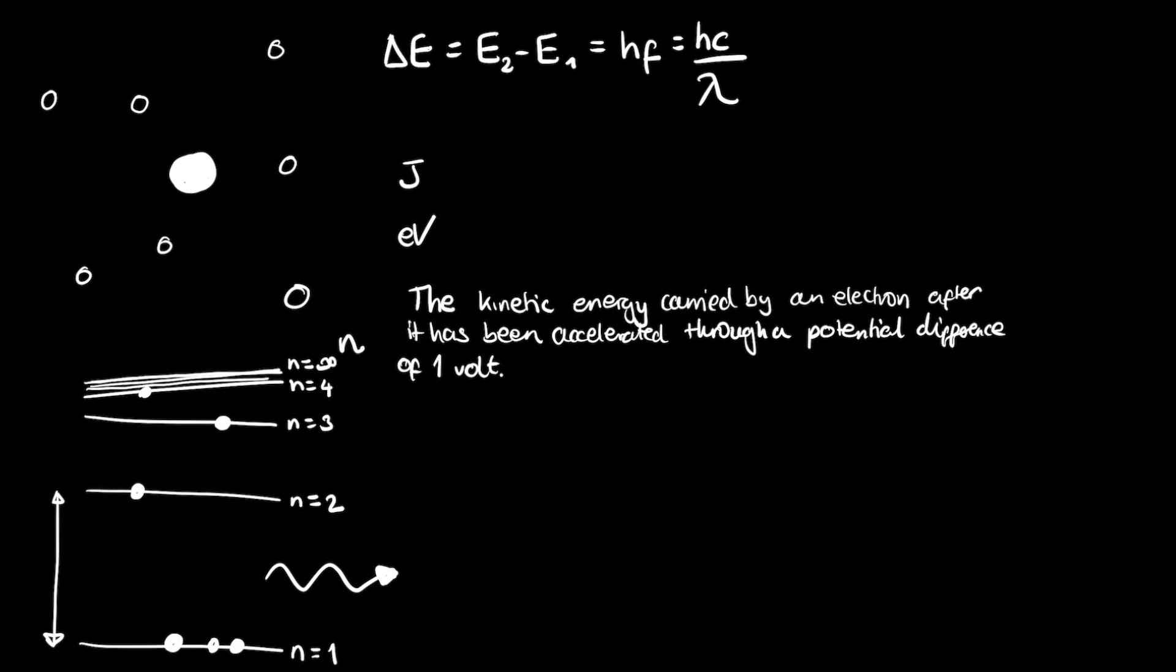And since we know that generally speaking energy equals voltage times charge, then if we take the combined term electron volt, we know that voltage is volts, obviously, so there's your V. And electrons have a negative charge.